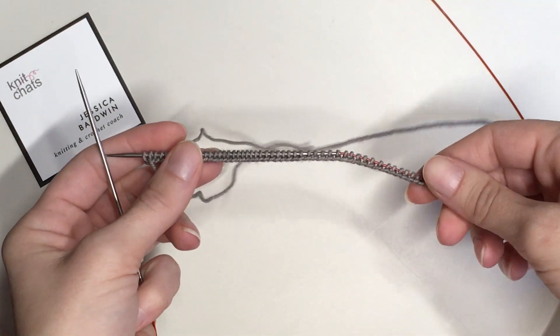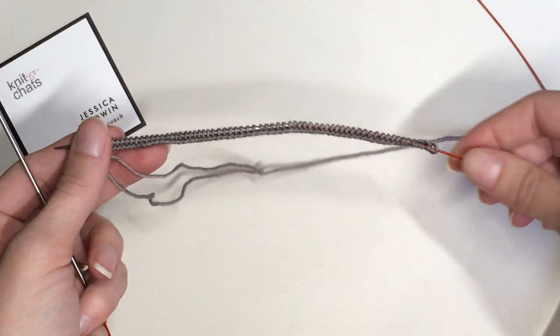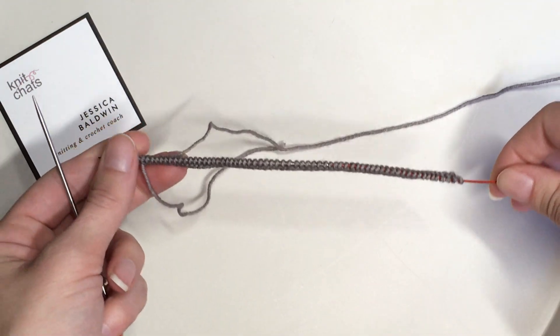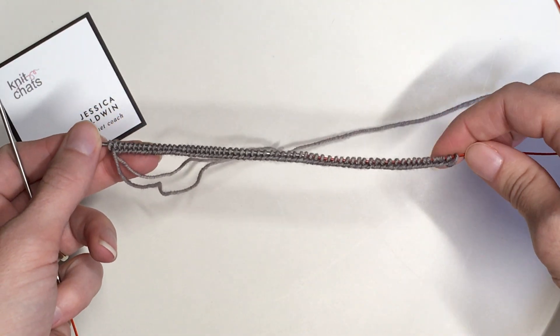So here I have cast on my 64 stitches on a circular needle and I'm going to show you how to join in the round for magic loop.